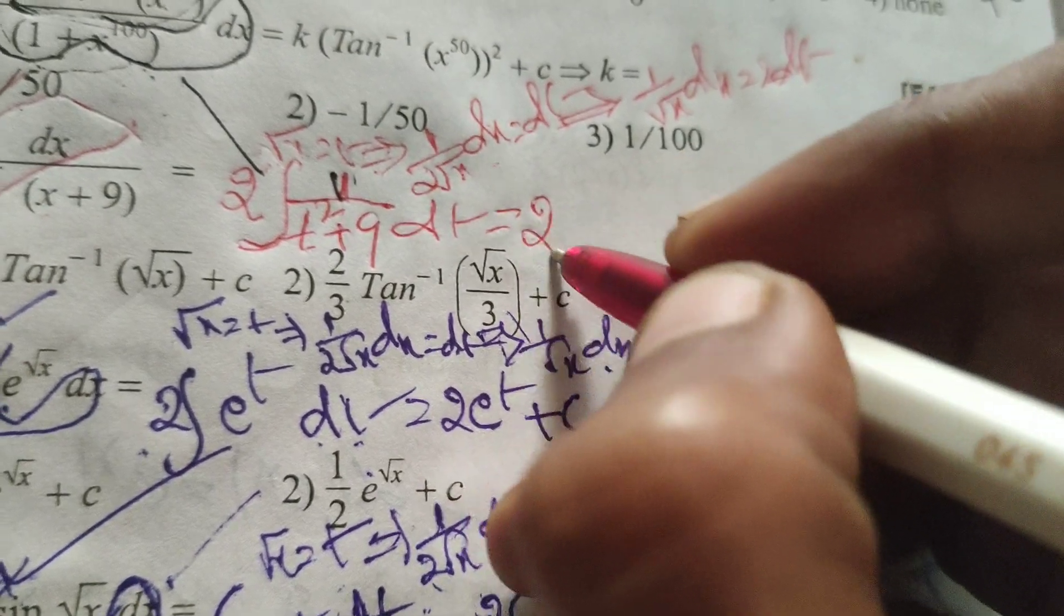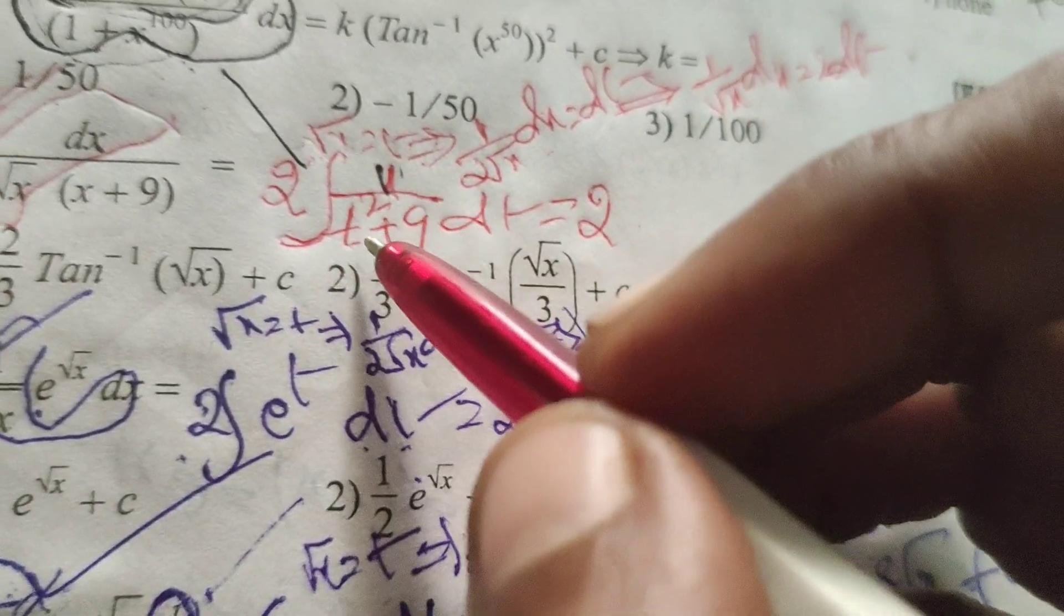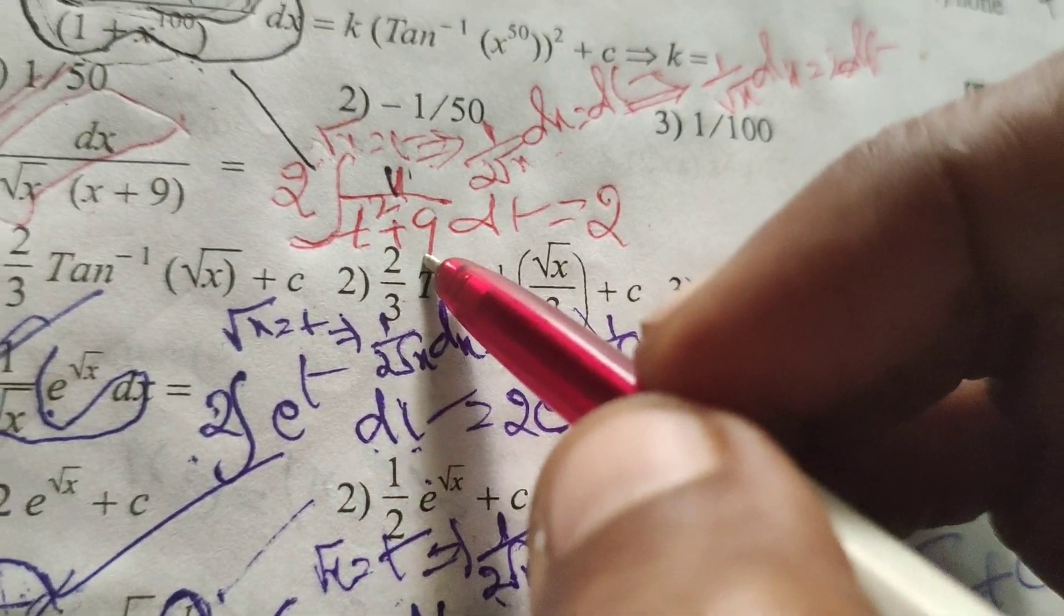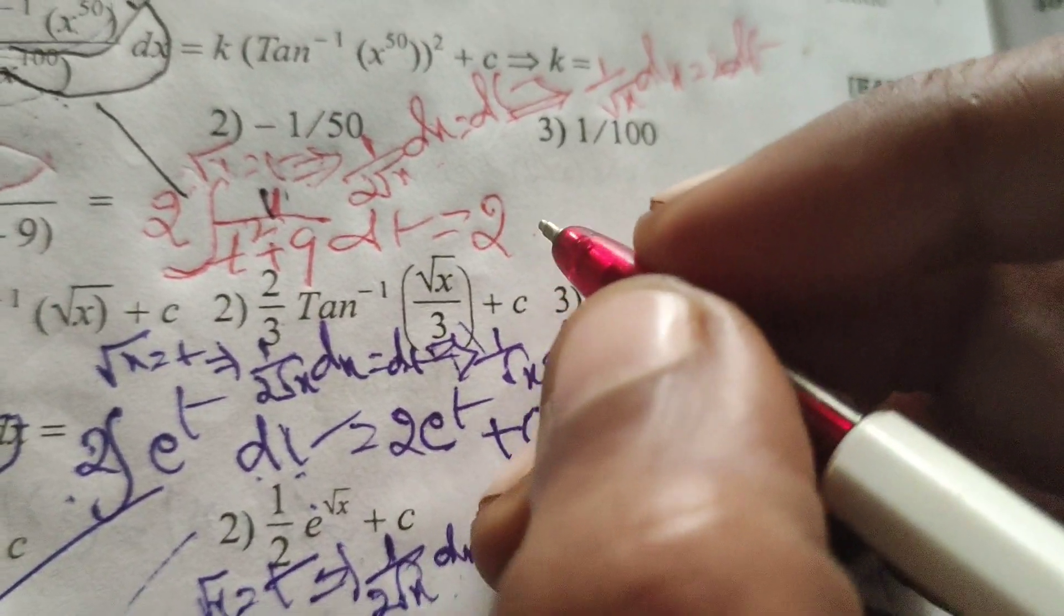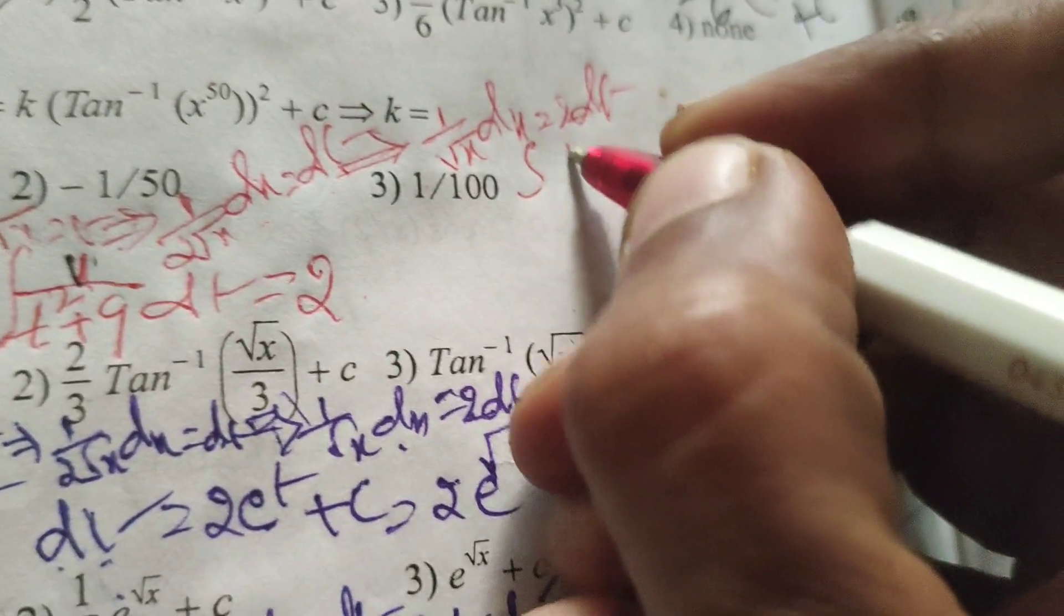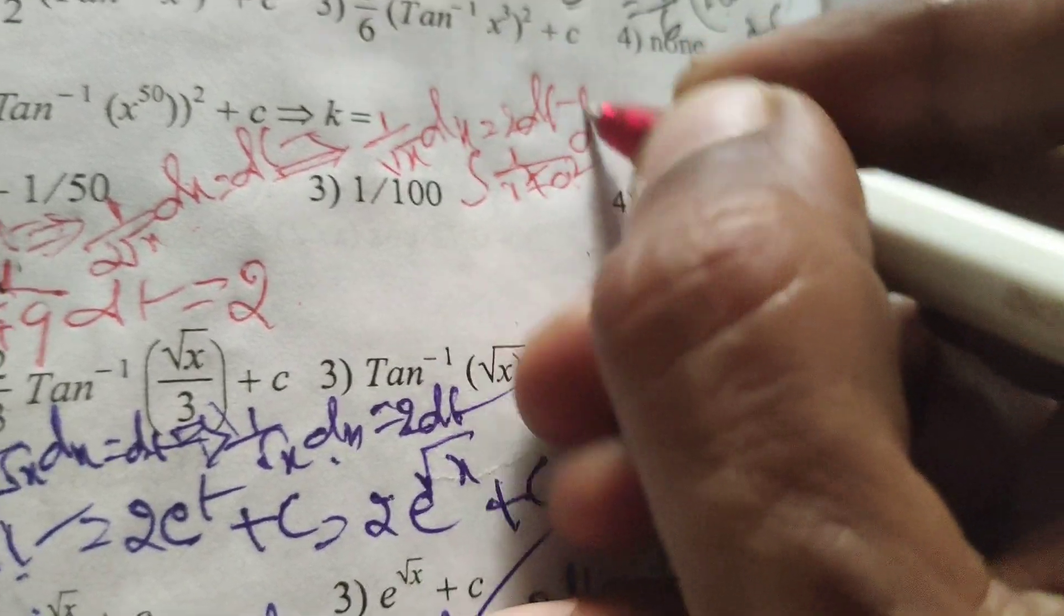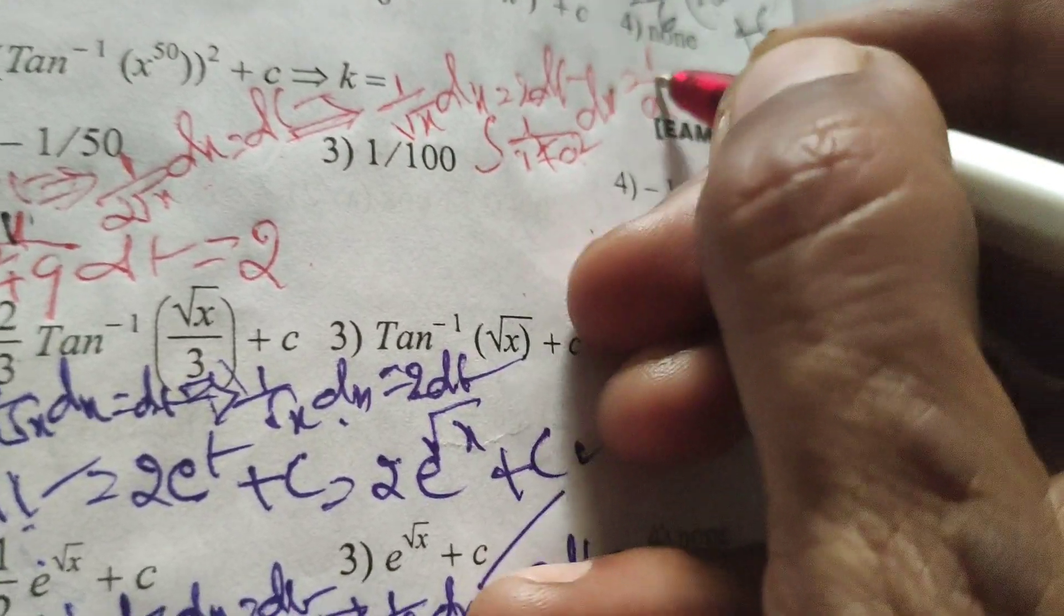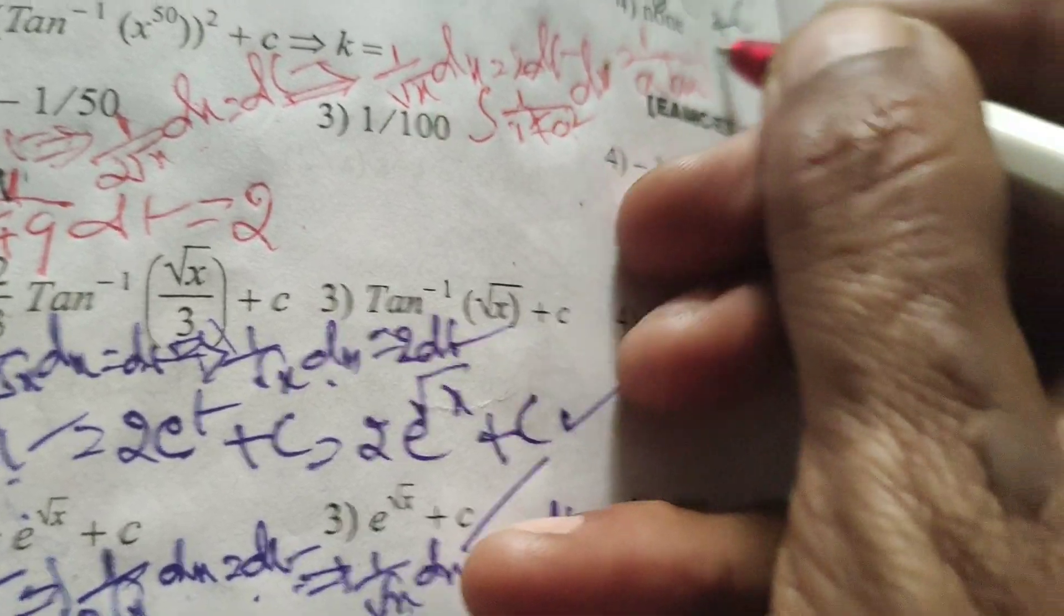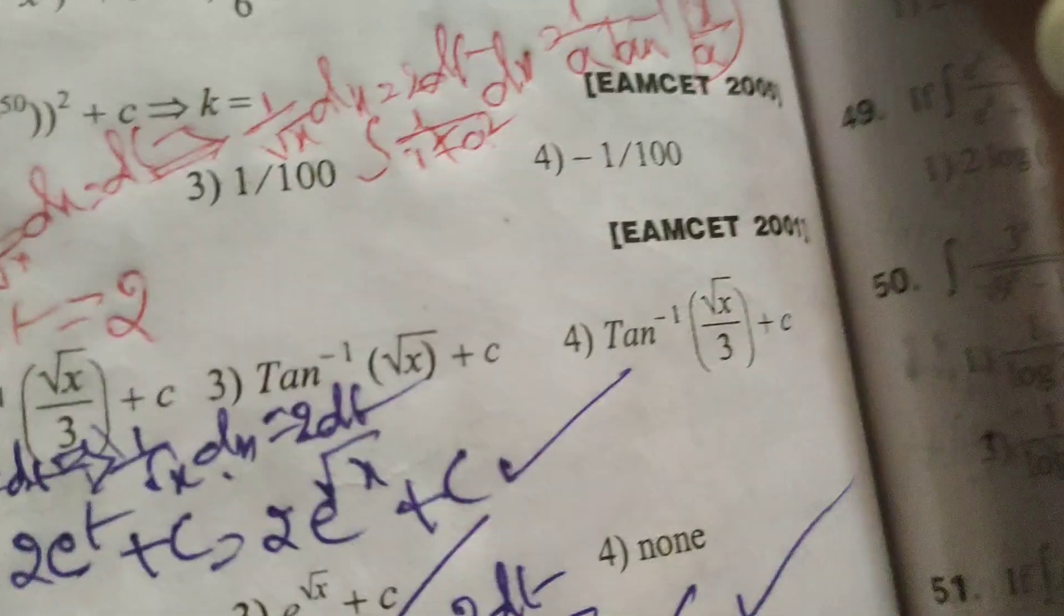Now integrating this, we use the formula: integral of 1 by x square plus a square dx equals 1 by a tan inverse of x by a plus c.